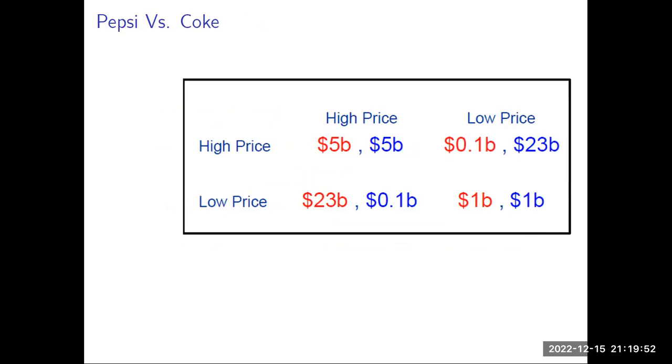Similarly, if Pepsi decreases its price and Coke also follows the decrease in price, they both lose because they end up in a price war. If Coke decreases its price followed by Pepsi, and Coke further decreases its price and Pepsi follows again, at the end of the day they will be having a price war, and in that price war the main loser will be the firms.